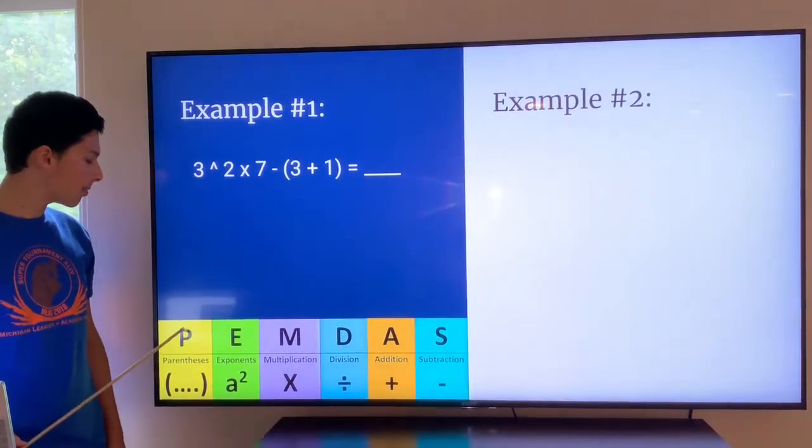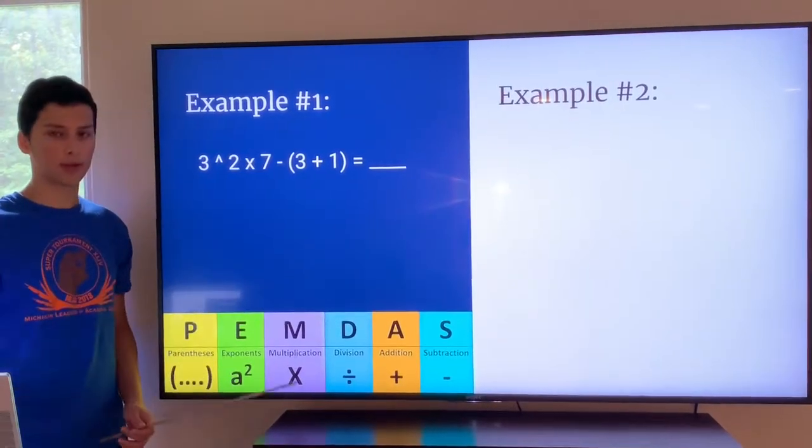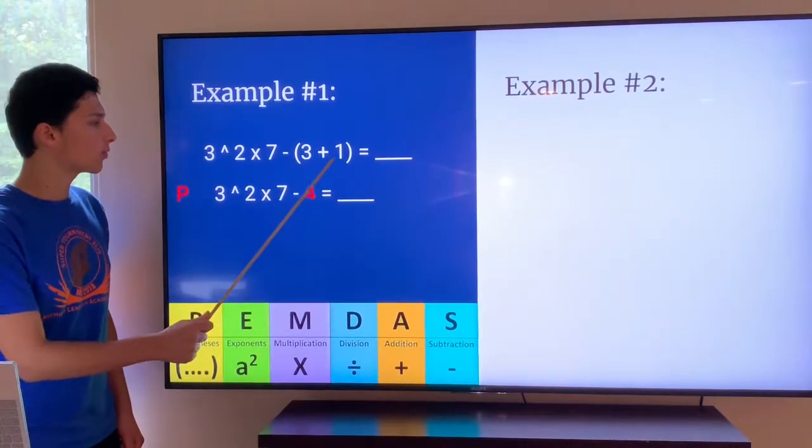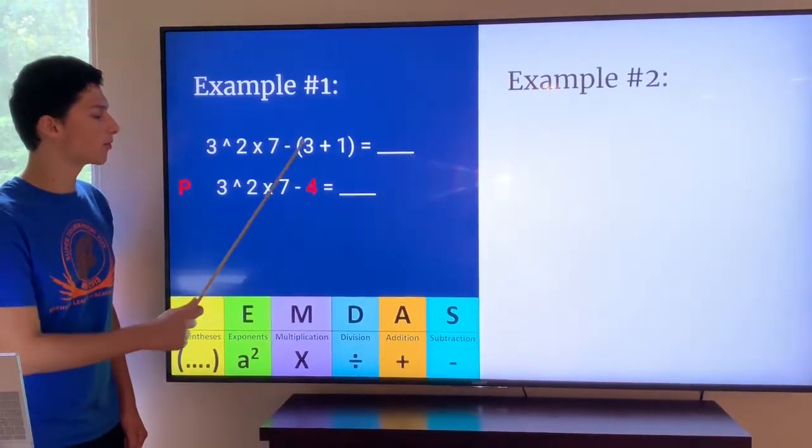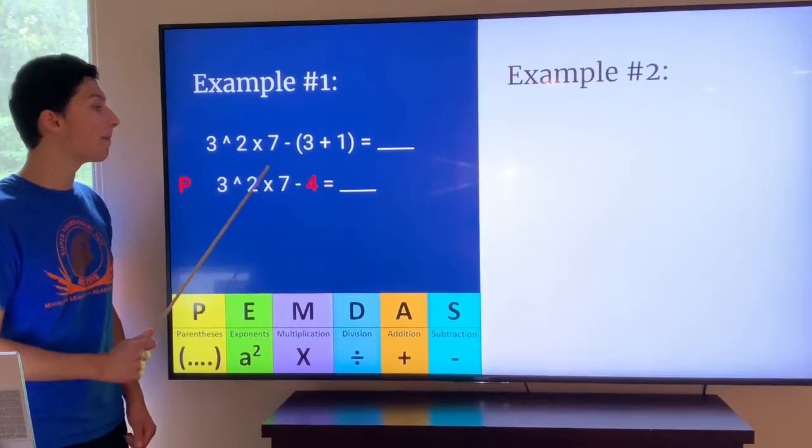So the beginning of PEMDAS is P parentheses. We see parentheses in this example, so we're going to resolve the parentheses. Three plus one is four. We just substitute four for three plus one. So now we have three to the power of two times seven minus four, and we have P as parentheses.